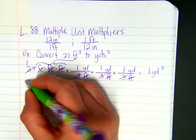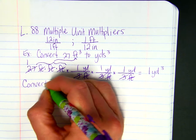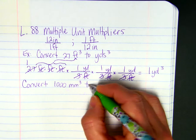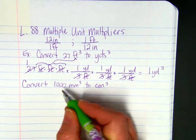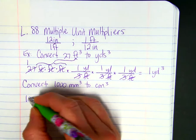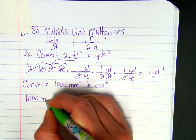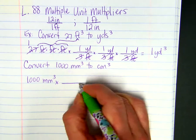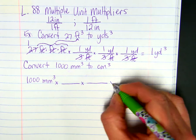Another example would be convert 1,000 millimeters cubed to centimeters cubed. So again we write, if we can remember that millimeters cubed means that there are three labels multiplied by each other, so we'll need three unit multipliers.